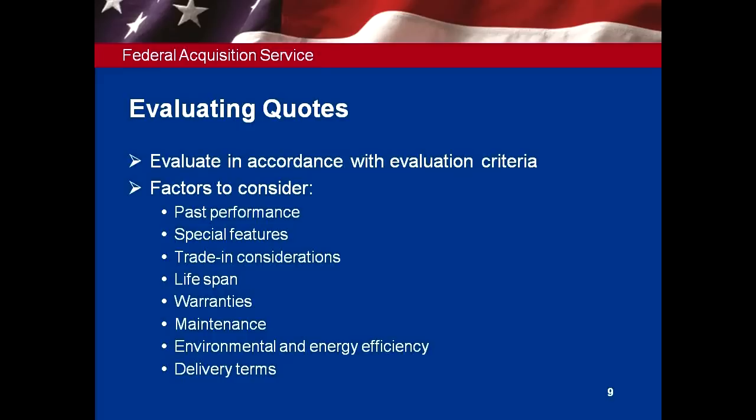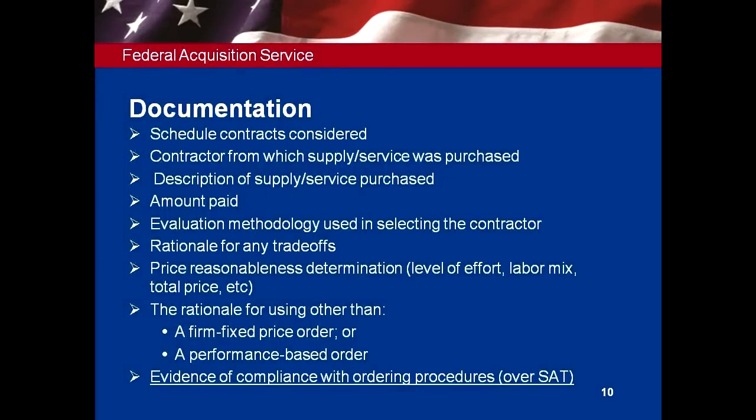What do you need to document, and how has that changed under the Section 863 requirement? Nothing has really changed except now you need to show that you complied with the ordering procedures if the requirement was estimated over the simplified acquisition threshold. You can print out your eBuy screenshot and show the quotes you received. That documentation must now be in the contract file. You also need to document who you awarded it to, the price, and why you awarded it to them.